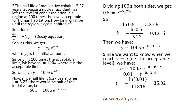Number five: the half-life of radioactive cobalt is 5.27 years. Suppose a nuclear accident has left the level of cobalt radiation in a region at 100 times the level acceptable for human habitation. How long will it be until the region is again habitable? What you have here is an exponential decay — these radioactive materials are decaying exponentially.